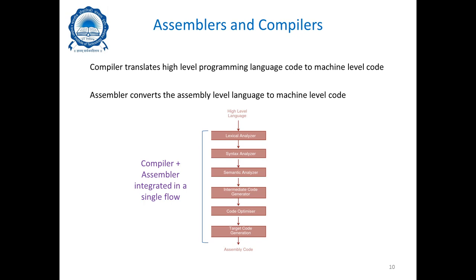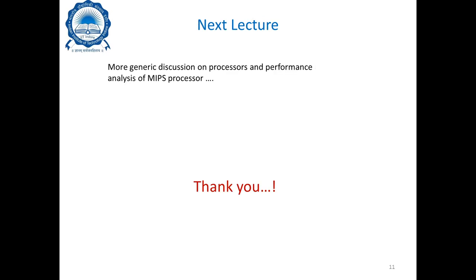Today we had a generic discussion about computer architecture, covering what computer architecture is, the different classifications, the difference between microprocessor and microcontroller, the software abstraction flow, and how compilers and assemblers fit into the flow. This course is a useful build-up for subsequent courses in your curriculum such as compilers and operating systems. In the next lecture, we will focus more on other types of processors and performance analysis.